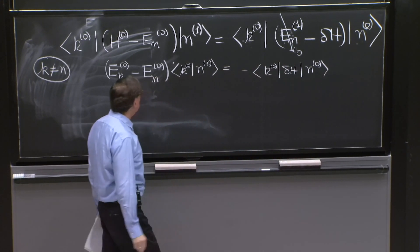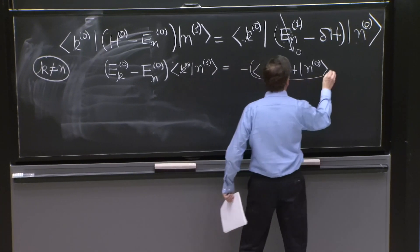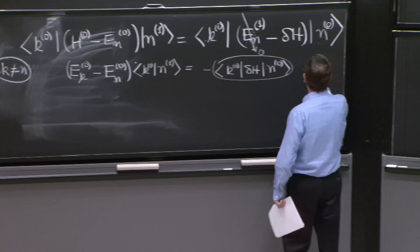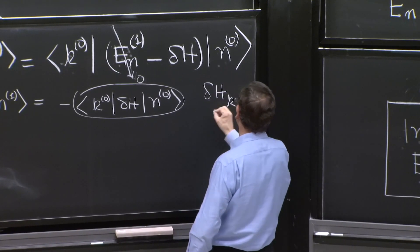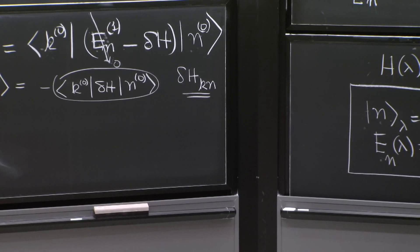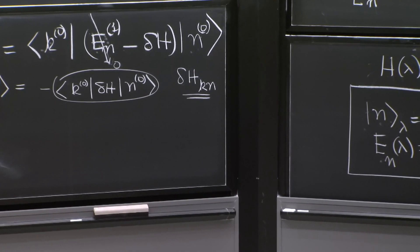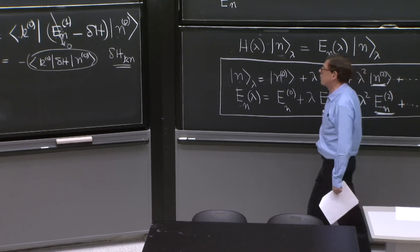And it's a good notation to call this, to save writing, delta H_kn. It's a good name for it—it's the k nth element of the matrix delta H.